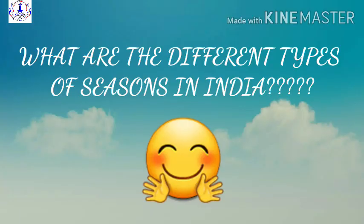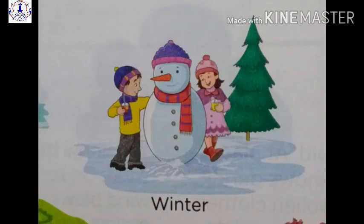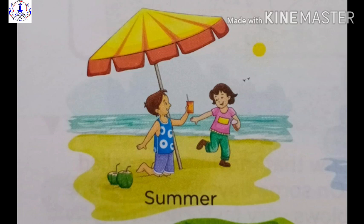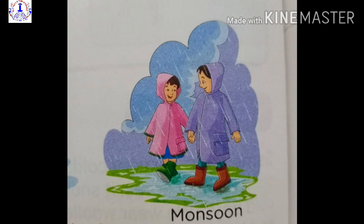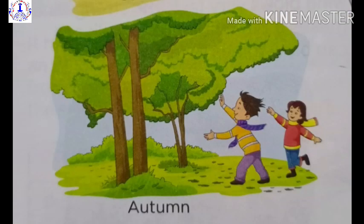Before beginning with the poem, students, please answer my questions. Question number 1: What are the different types of seasons in India? Basically, we have four main seasons — winter occurring from December to February; summer or pre-monsoon season lasting from March to May; monsoon or rainy season lasting from June to September; and post-monsoon or autumn season lasting from October to November.